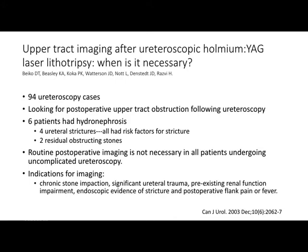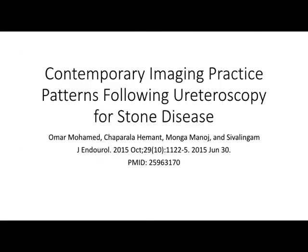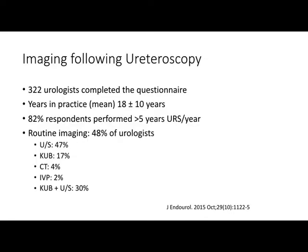Data from Kingston and Western Ontario looked at 94 cases. Six patients afterward had hydronephrosis—two were due to obstructing stones. The four patients who did develop ureteral strictures all had risk factors: significant ureteral trauma, a significantly impacted stone, pre-existing renal function impairment, or a visible stricture at the time of ureteroscopy. They concluded routine postoperative imaging is not necessary in all patients unless they're symptomatic or unless you have high suspicion at the time of ureteroscopy. A Cleveland Clinic questionnaire found routine imaging was done in only about 48% of urologists. The majority used ultrasound, about 30% combined KUB and ultrasound, and very few used CT or IVP.